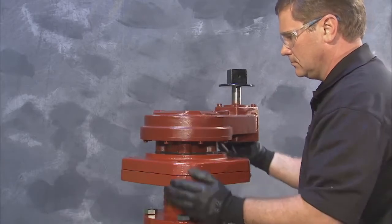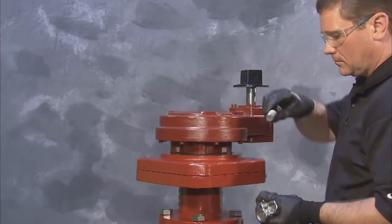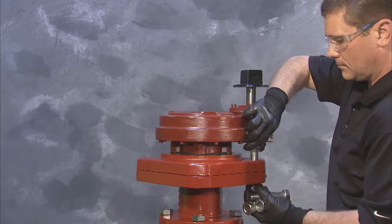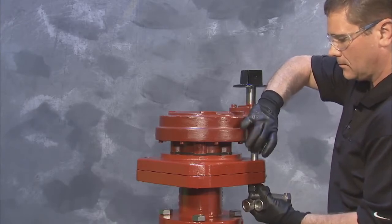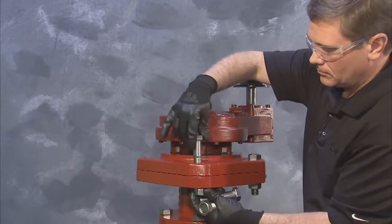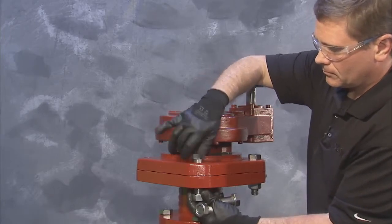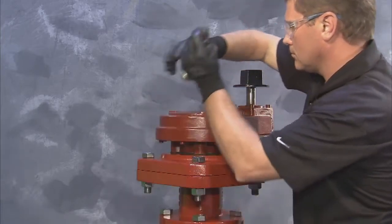Align the gear housing to the correct orientation and secure the adapter plate to the extension by aligning the bolt holes. Once the bolt holes are aligned, proceed to insert the hex bolts, attach the nuts and tighten.